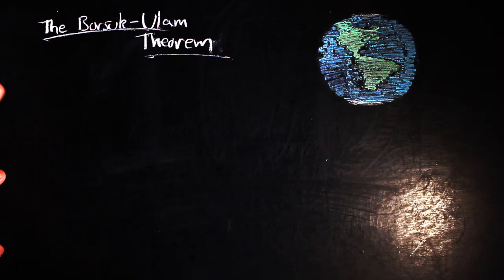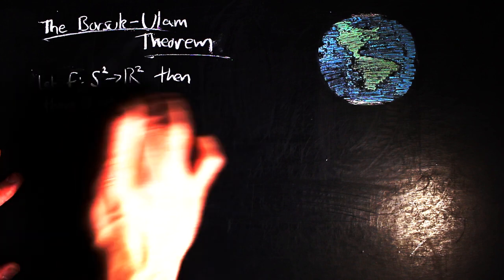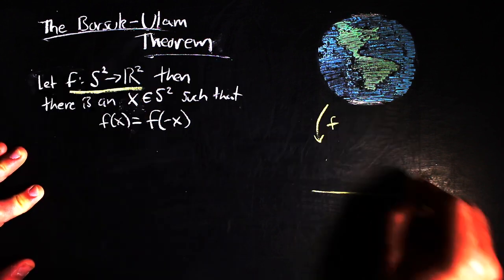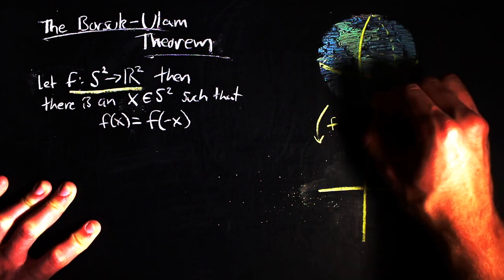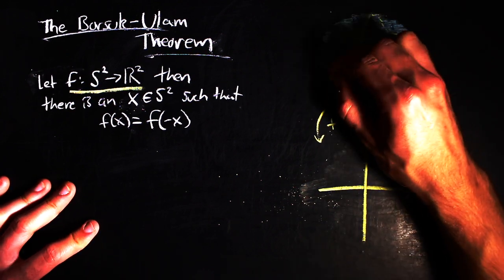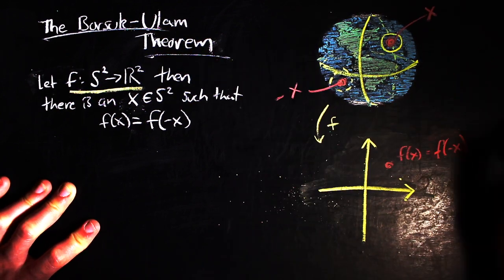One such example of a theorem is the Borsuk-Ulam theorem, which states that for any continuous map from the sphere to the plane, there is a point on the sphere such that the image of the map at that point is equal to the image of its antipode.